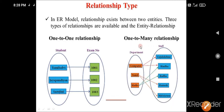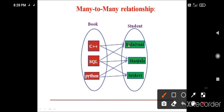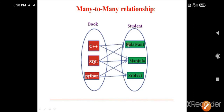The next is many-to-many relationship, where one attribute can have more than one combination. More than one entity can be associated with more than one other entity. This is a simple but very important concept.